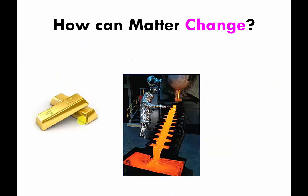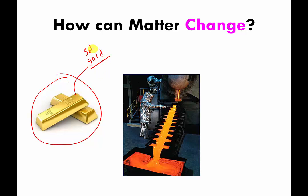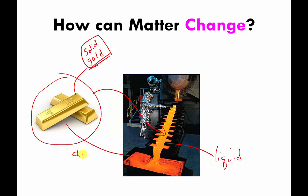It's not just water that does this. Most pure materials can do this under the right circumstances. For example, gold — shown here as solid bricks — if you heat it up enough, you can turn it into a liquid state. So going from a solid to a liquid, even in the case of gold, is called a change of state. And you could heat the liquid gold up even more, and it will turn into a gas. So you can change the state of gold or other pure materials similarly to the way we change the state of water.